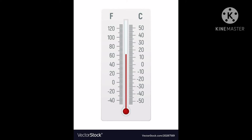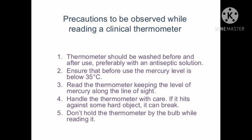For using the thermometer, there are certain precautions to observe. First, the thermometer should be washed before and after use, preferably with an antiseptic solution. Second, ensure that before use the mercury level is below 35°C. Read the thermometer keeping the mercury level along your line of sight. Handle the thermometer very carefully — if it hits a hard object it can break. Do not hold the thermometer by the bulb while reading it.